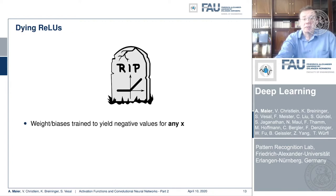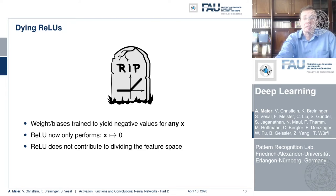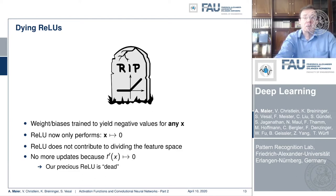One problem still remains the dying ReLUs. Because if you have weight biases trained to yield negative results for x, then you simply always end up with a zero derivative. And the ReLU always performs a zero output. And this means then that the ReLU no longer contributes to your training process during the feature space. So it simply stops at this point. So no updates are possible because of the zero derivative. And this precious ReLU is suddenly always zero and can no longer be trained.